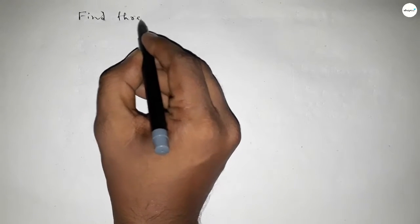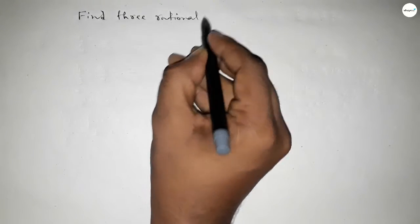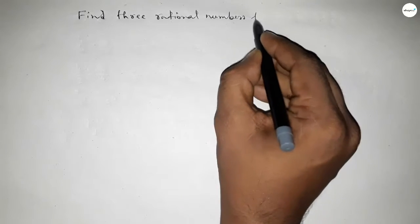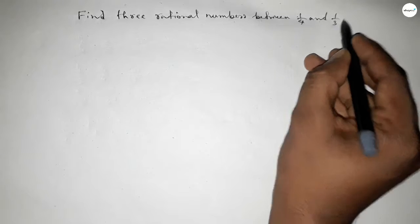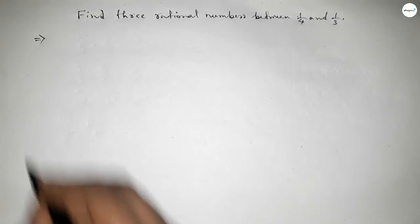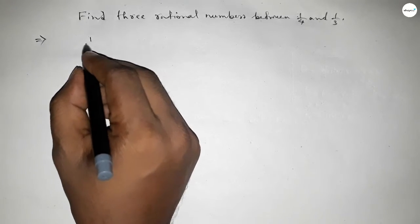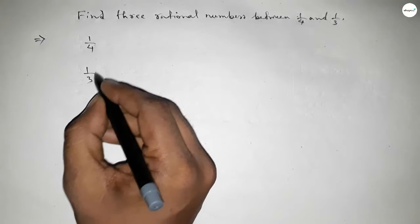Hi everyone, welcome to SSR Classes. Today in this video we have to find three rational numbers between 1 over 4 and 1 over 3. So let's start. First of all, write down 1 over 4 and 1 over 3.